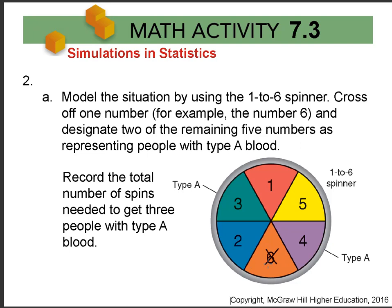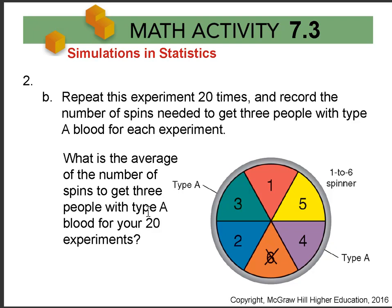Cross off the number you don't want, like six, just keep track of it, and assign two numbers to represent type A blood — it really doesn't matter which ones you pick. Then record the number of spins needed to get three people with type A blood. Spin repeatedly to get three type A results, then repeat this experiment 20 times and record those spins.